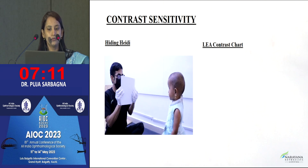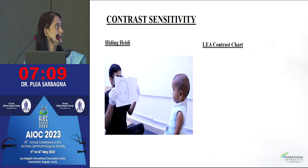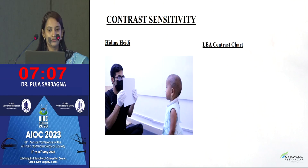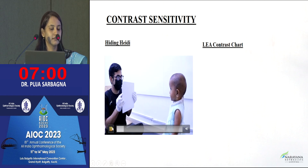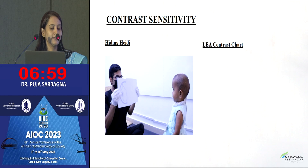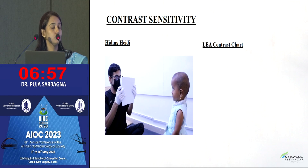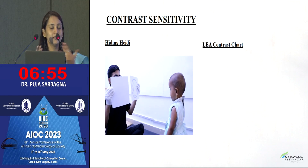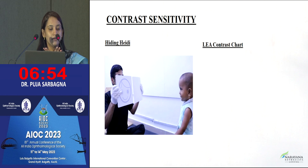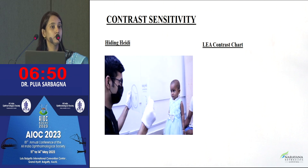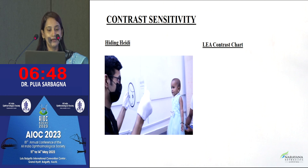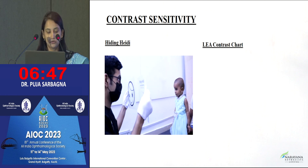For contrast sensitivity, we use Hiding Heidi — a smiley face test. Hiding Heidi starts from 100% contrast and goes down to 1.25%. Basically, we hide one face and then take it out, and we observe whether the child responds to the face or not, then document that contrast sensitivity.